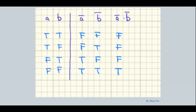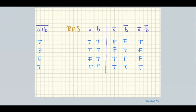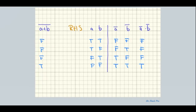Now you can see the final columns are agreeing. The column for (a+b)̄ agrees with the column for ā·b̄. We have used truth tables to show that (a+b)̄ = ā·b̄ by going through an exhaustive list of values for a and b, constructing the truth tables one piece at a time, one operation at a time, and then checking the columns for the truth values.